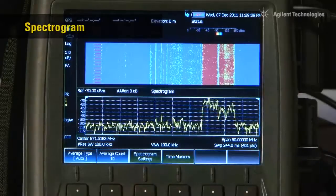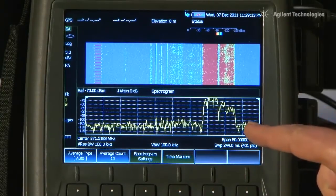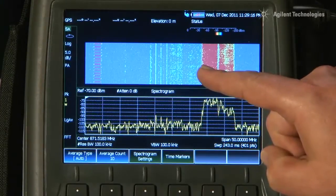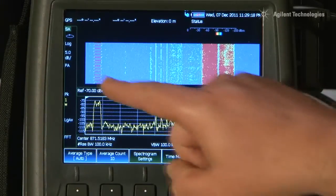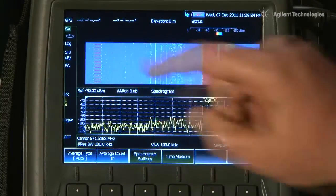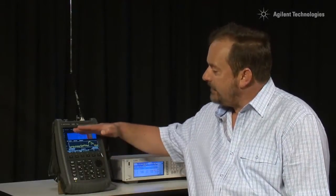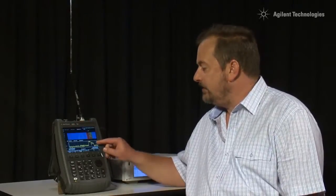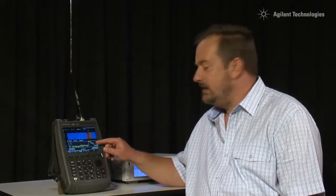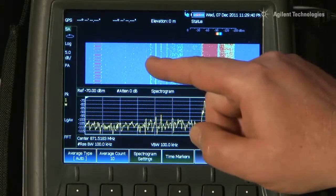The interference analyzer option greatly simplifies the task of capturing intermittent signals. The lower half of the display shows the normal spectrum analyzer trace, as we have seen previously, but the upper half of the display now shows a spectrogram. The X axis still displays frequency, but the Y axis now displays time. Each new sweep of the spectrum analyzer trace is added to the stack of other traces, and the amplitude of the signal is indicated by the color. So red is a strong signal and blue is a weak signal.